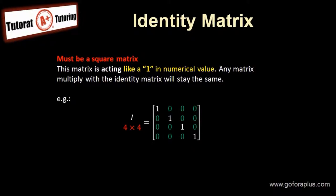So what is an identity matrix? An identity matrix must be a square matrix, and this matrix acts like a 1 in numerical value — any matrix multiplied with the identity matrix will stay the same matrix. In this example, a 4 by 4 identity matrix: the main diagonal must be all 1, and the rest must be all 0. So this is what we call an identity matrix.